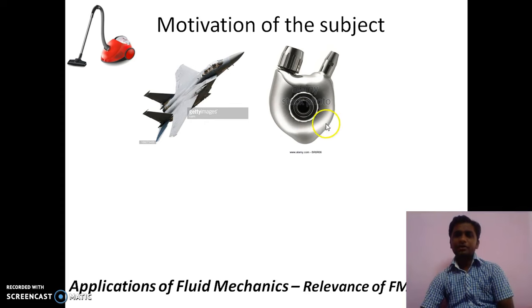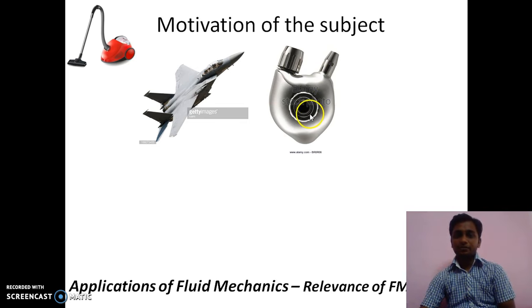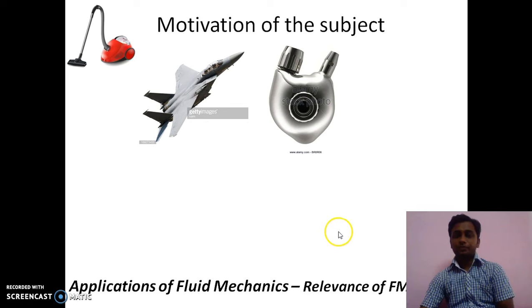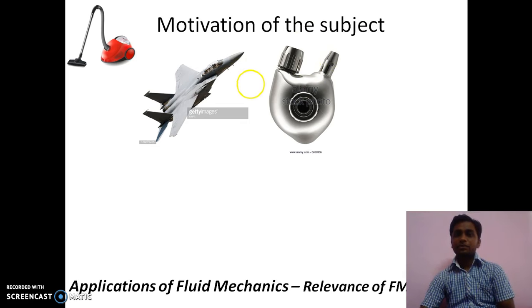We can also consider a biomechanic system such as an artificial heart. The function of the heart is to pump blood, and if it is not functioning properly, we can implant an artificial heart. This artificial heart is designed on the basis of the principles of fluid mechanics because it has a pumping system, forces, and valves through which blood should flow at a certain flow rate.